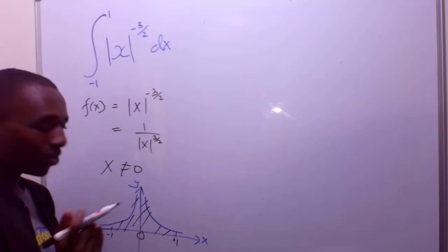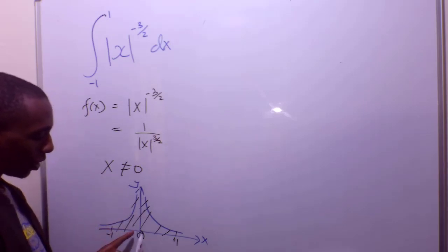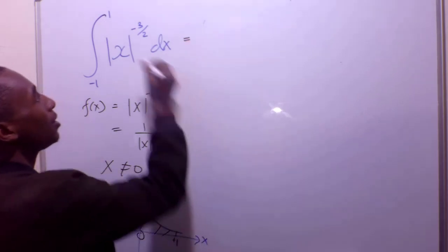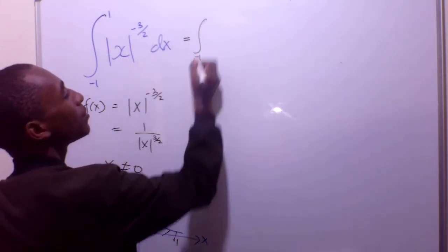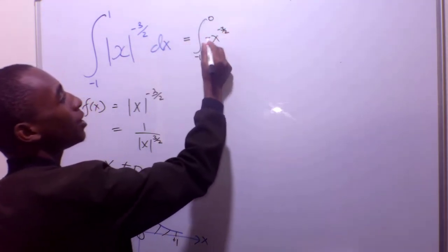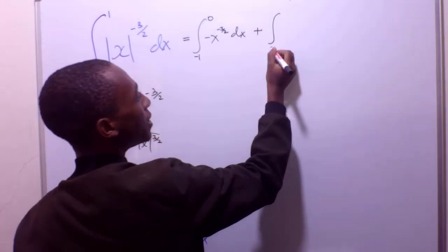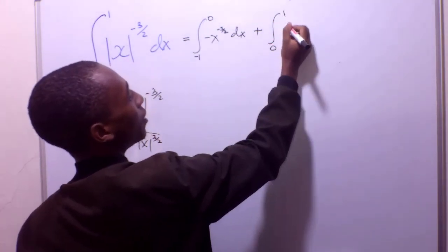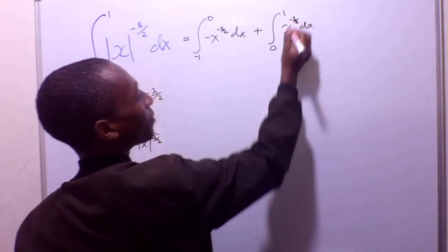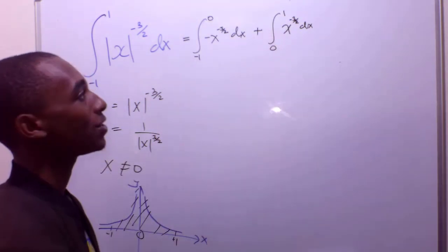What I'm going to do is break this into two parts. I'll take the integral from negative 1 to 0, and then the integral from 0 to positive 1. So I'll write this as the integral from negative 1 to 0 of negative x to the power negative 3 over 2 — negative because that's the negative part — plus the integral from 0 to 1 of x to the power negative 3 over 2, since on the positive side, the absolute of x equals x.